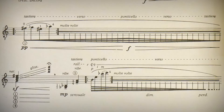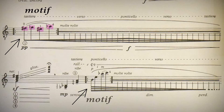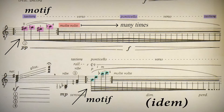Moving on to the next page, I'll focus on two passages. The first gives the performer an indication and then allows free interpretation. The indication 'molte volte' means many times, so we should play the motif as many times as needed to go from the fingerboard towards the bridge and then back. The same happens with the second variation of this idea.